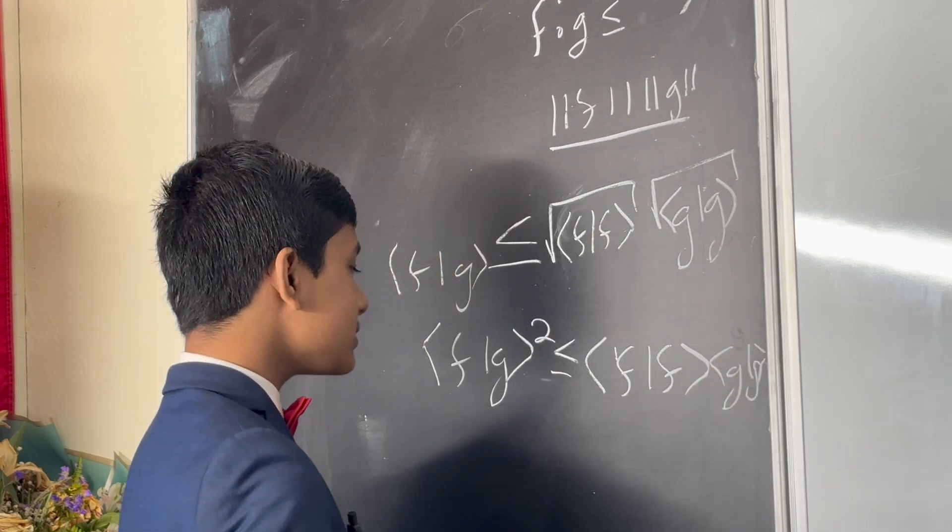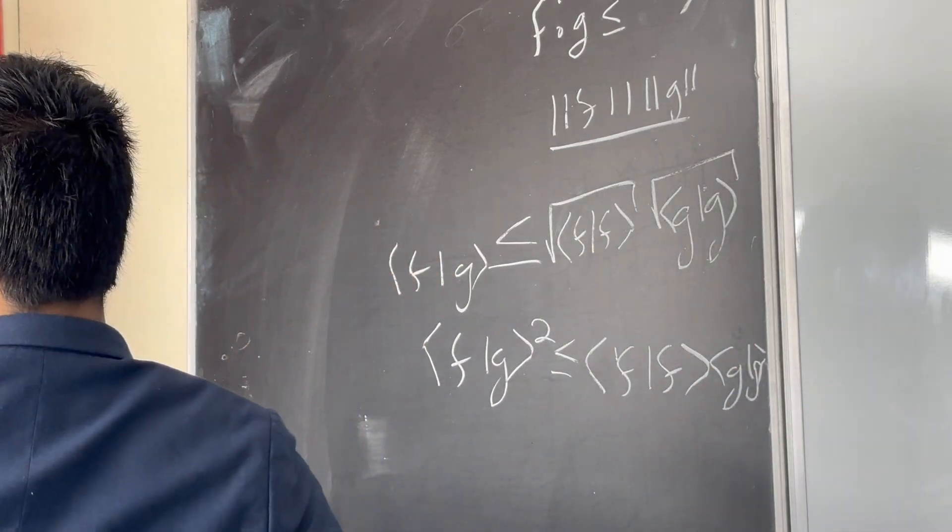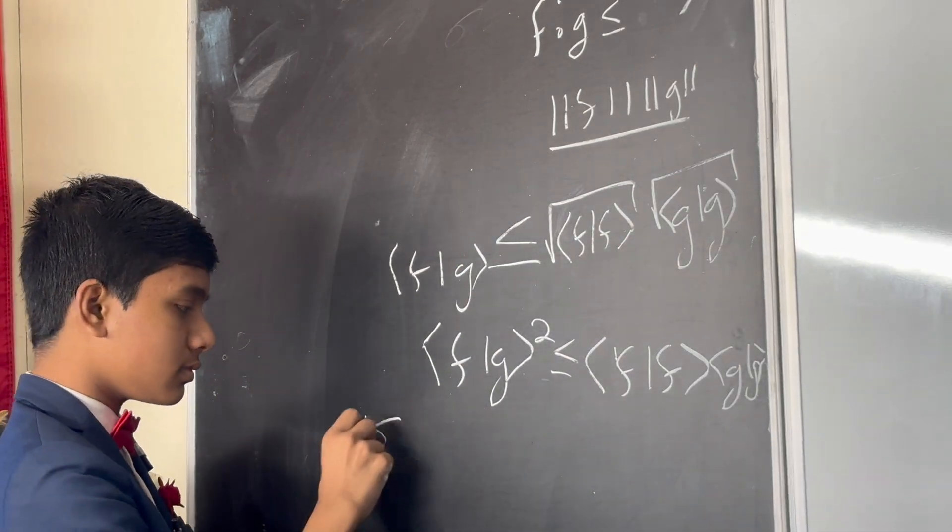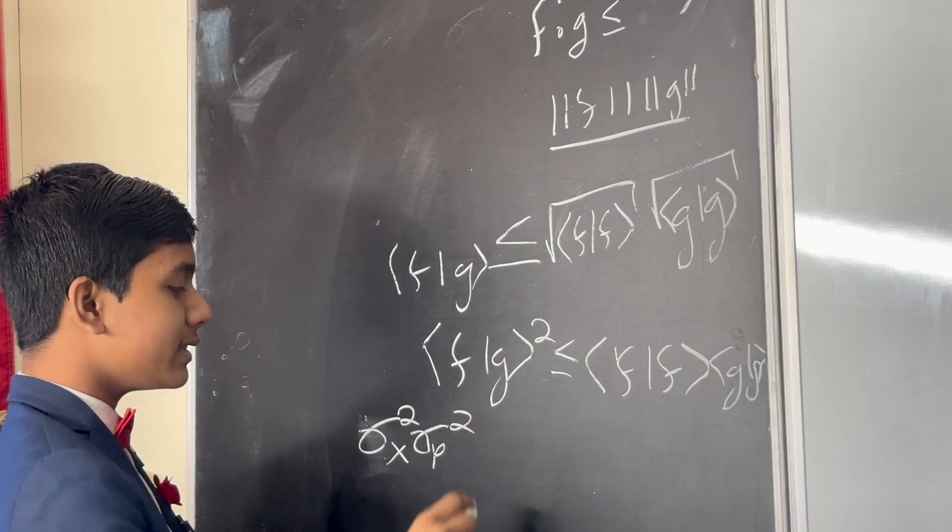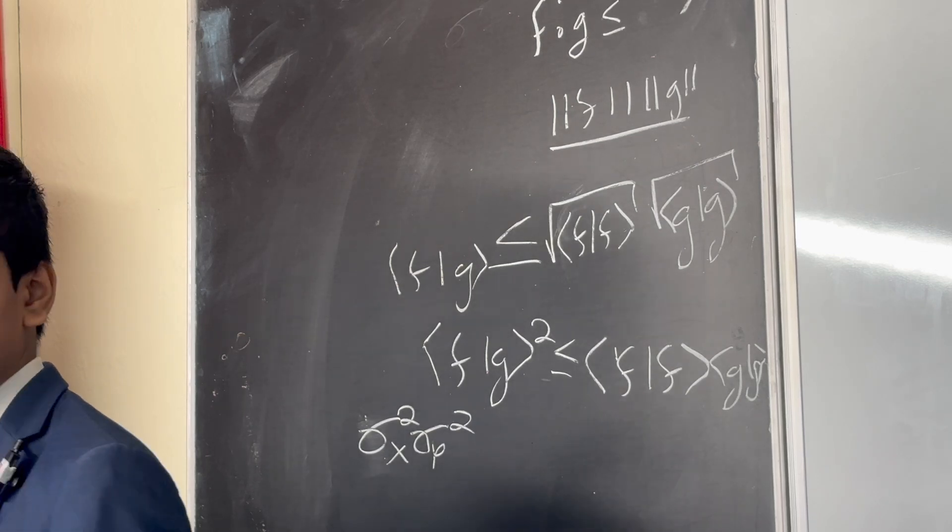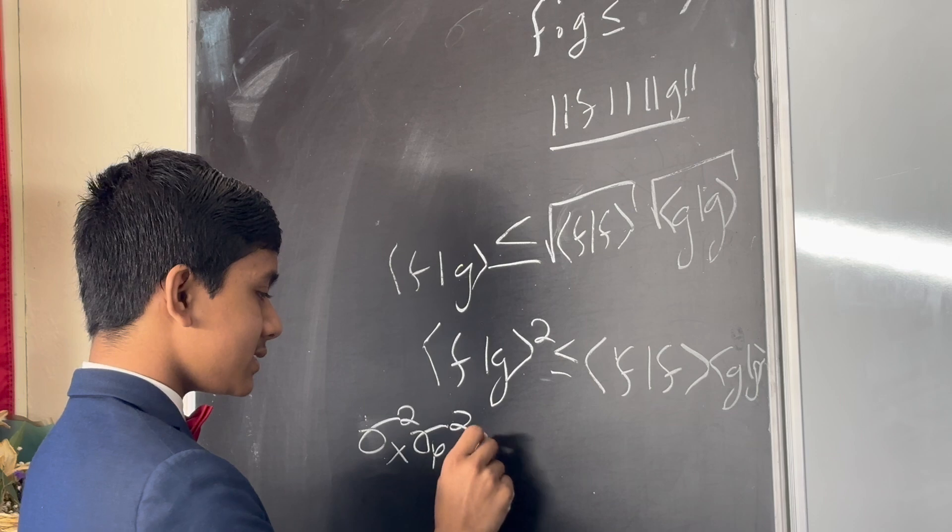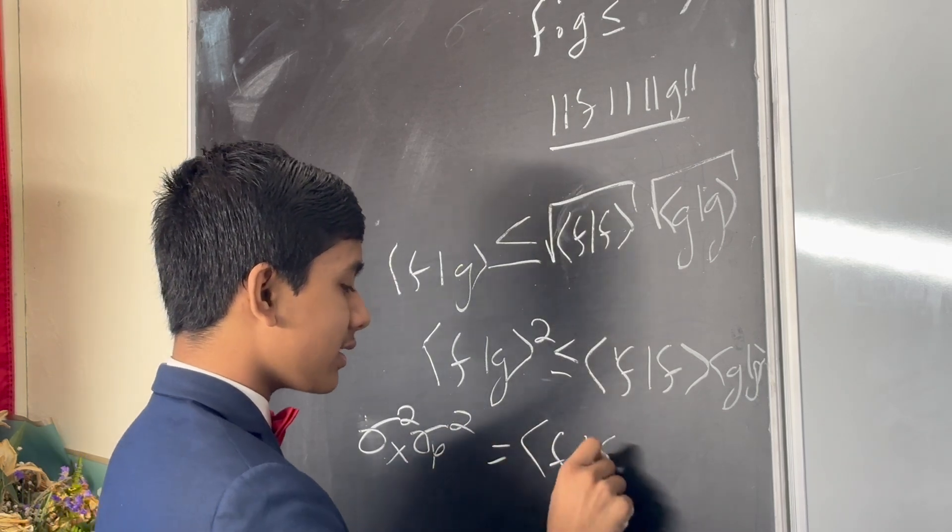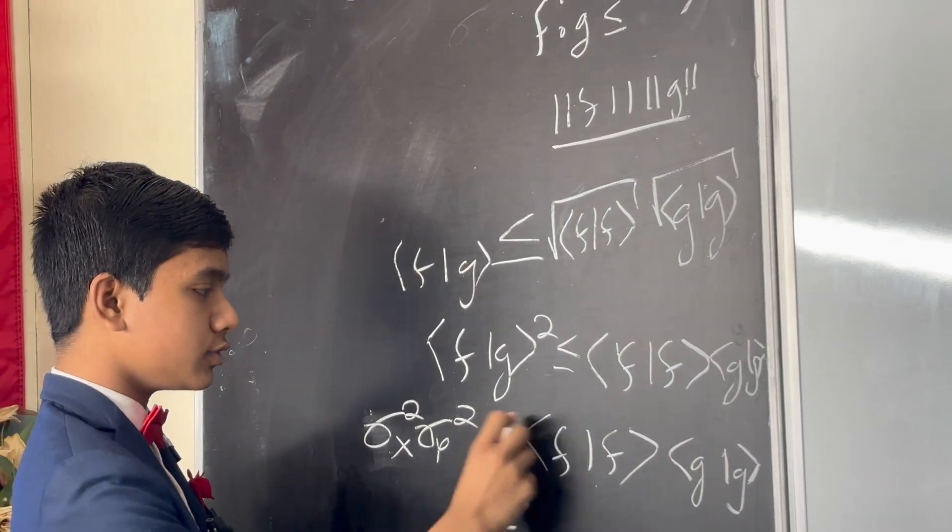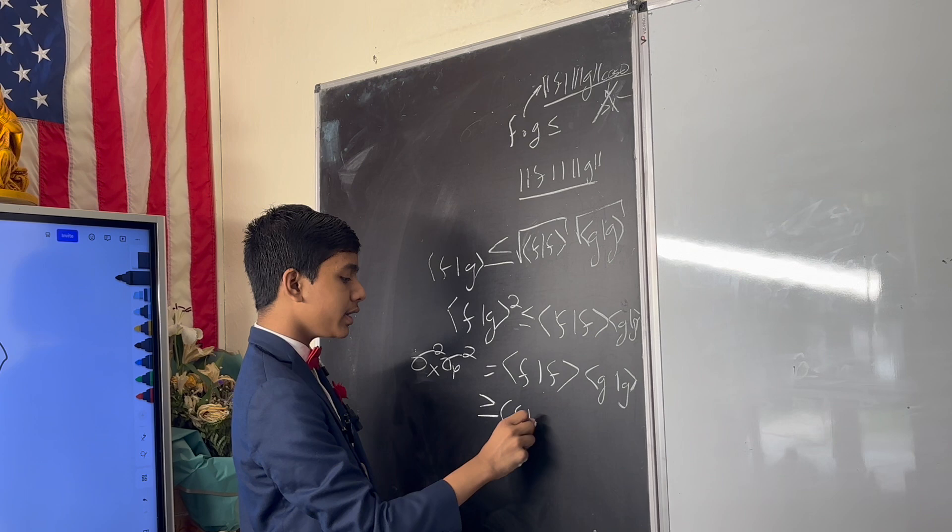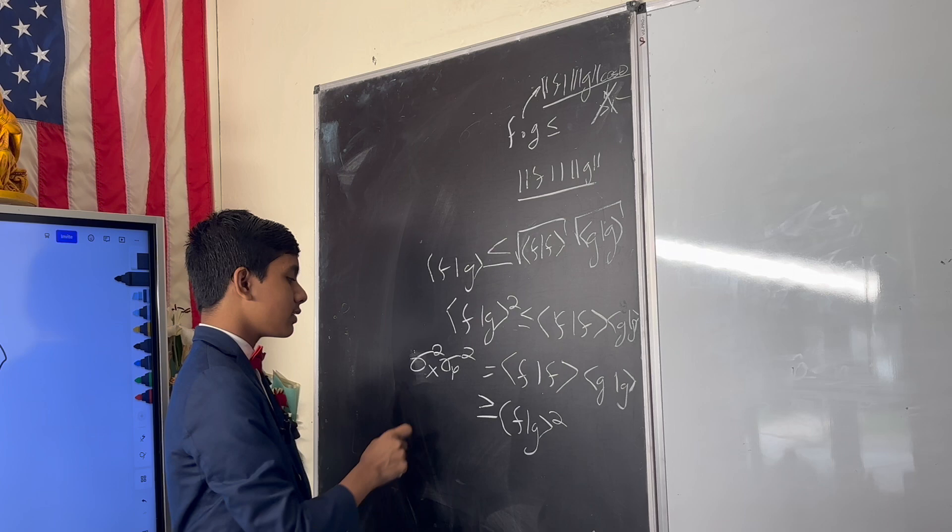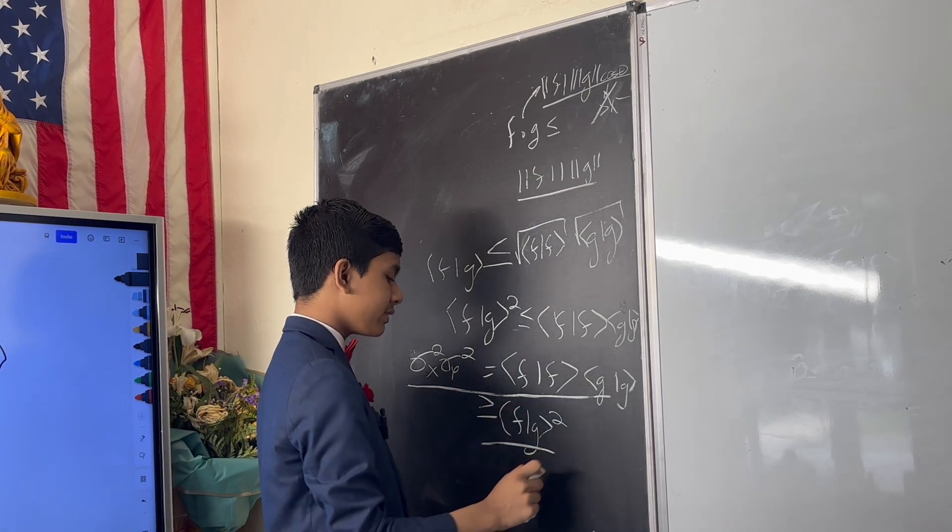Now why do we need to square both sides? Well, if we multiply these two together, we'll get that this multiplied by this, we're going to abbreviate this as f and this as g because it's too clunky to write right now. So this is just going to be f dot f times g dot g, which is greater than or equal to f dot g squared by this logic. So we now have this relation.